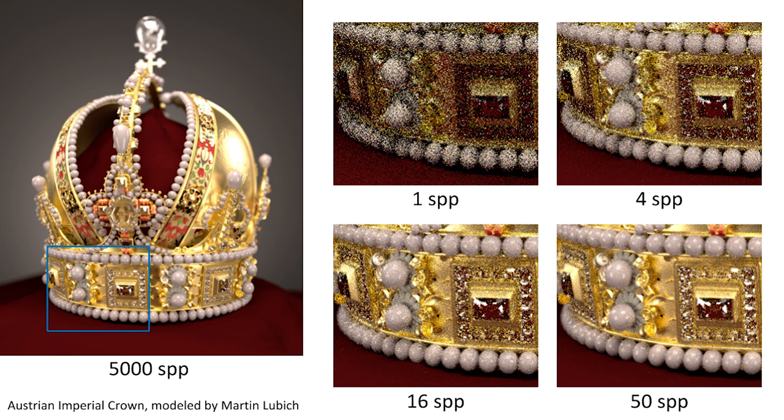There's a diminishing return here — the variance goes down with the square root of the number of samples. So going from four samples is twice as good as one sample; nine samples is three times as good. But it's diminishing returns, so we just can't afford to shoot 5,000 rays per pixel right now. We have to do something else, and that's denoising.